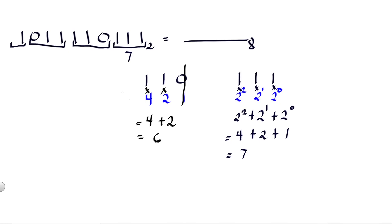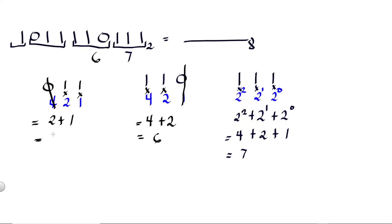Next group, 011 — using the doubling method, the positional values are 1, 2, and 4. We cancel the leading zero, then 1 × 2 = 2, plus 1 × 1 = 1. So 2 + 1 = 3. Thus 011 is equivalent to 3 octal.